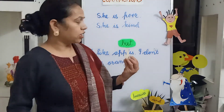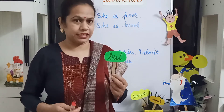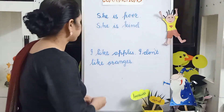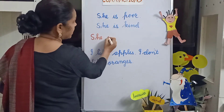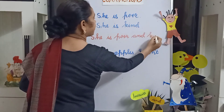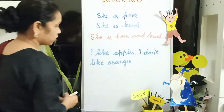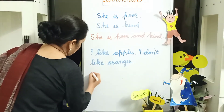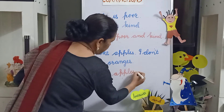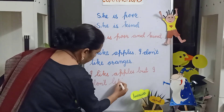Now, children, we will use conjunction 'but.' We use conjunction 'but' when ideas are opposite, or to show the differences. Here: 'She is poor' and 'she is kind' — she is poor but kind. Next: 'I like apples' and 'I don't like oranges' — so here we will use conjunction 'but': I like apples but I don't like oranges.